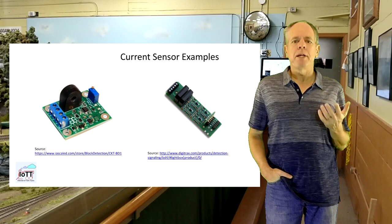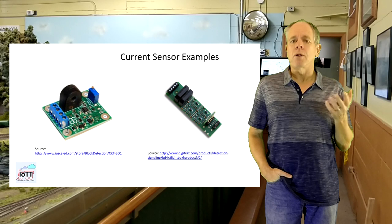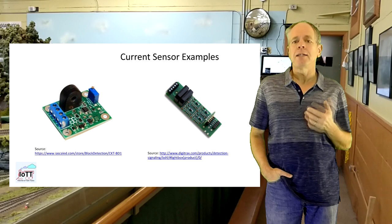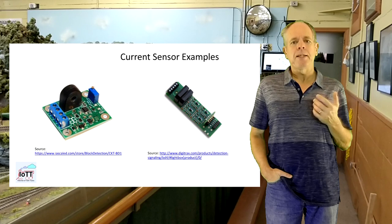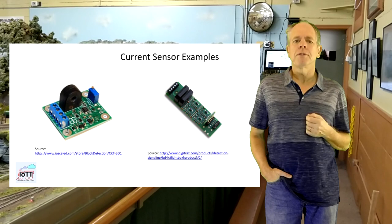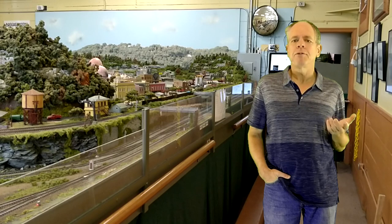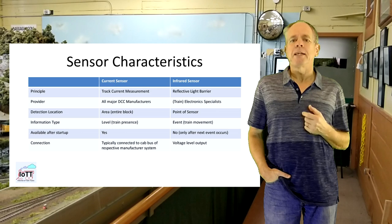Level sensors typically measure the current flow in a particular track section, normally called a block. As soon as at least a small current is detected, the block is reported as occupied. If there is no current, the block is considered unoccupied. To make it work, everything that should be detected needs to draw a certain current. This is no problem for locomotives, even if the motor is not running, as the small current draw of the decoder is already enough to trigger the detection circuit. To detect cars, it is common practice to equip one of the axles with a resistor, typically about 5 to 10 kilo ohms, that triggers the sensor. An example for a DCC level sensor is the Digitrex BDL168, and other manufacturers have similar devices.